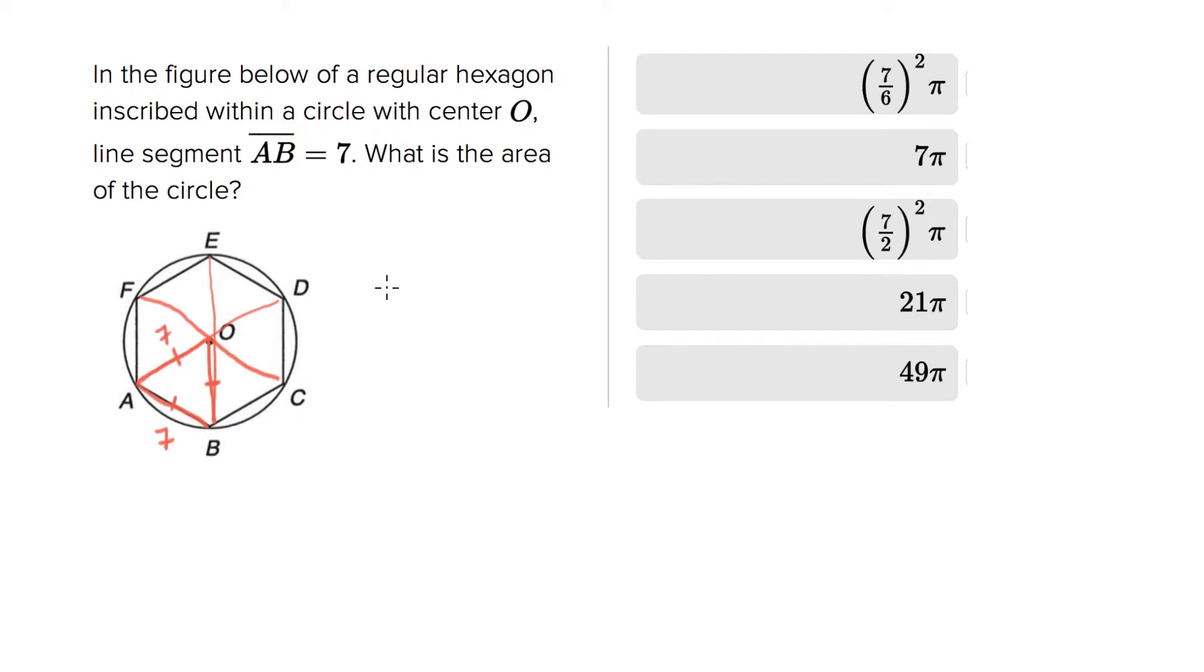AO, of course, is the radius of the circle. Once you know the radius of the circle, you can figure out the area, because the area of a circle is equal to pi times the radius of the circle squared, so that would be pi seven squared, or 49 pi, which is the fifth answer choice.